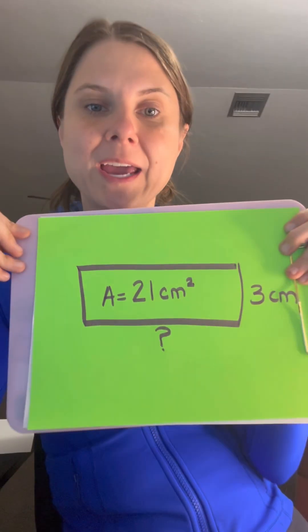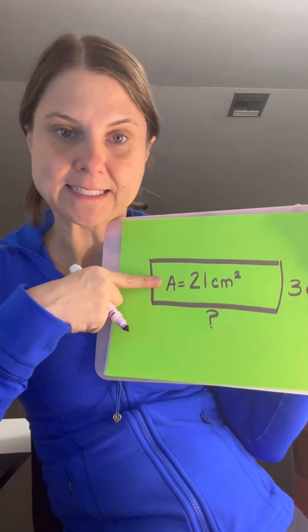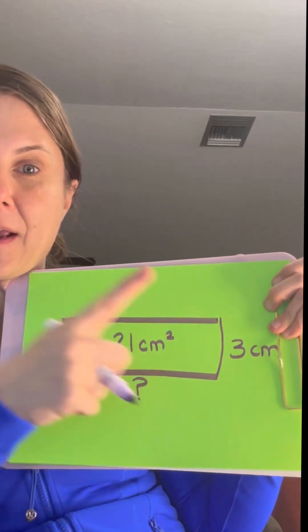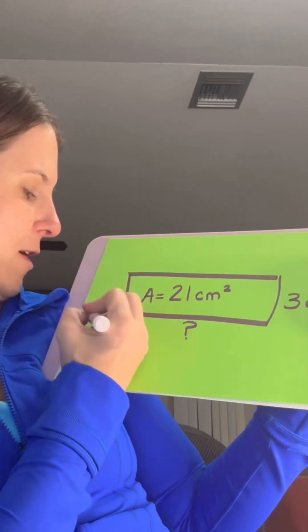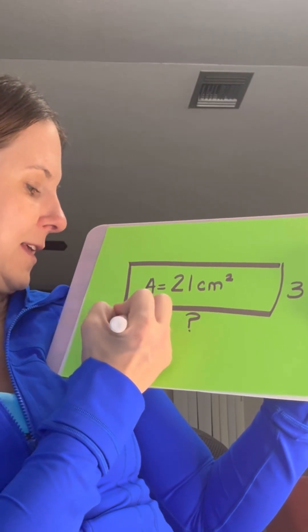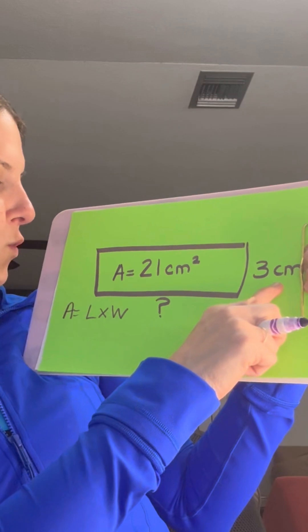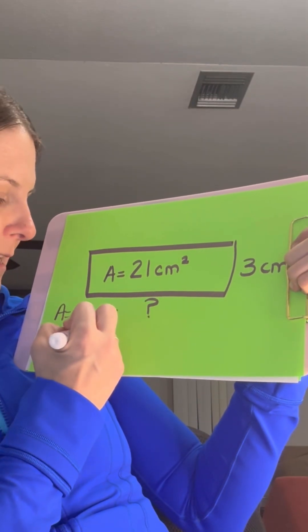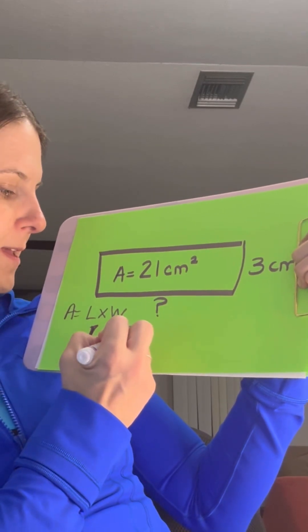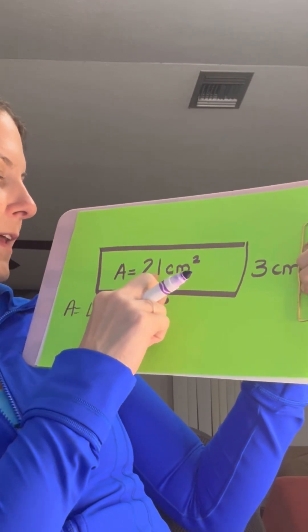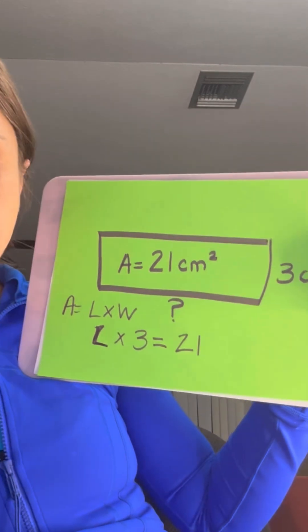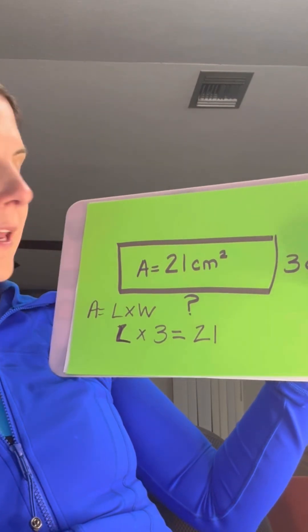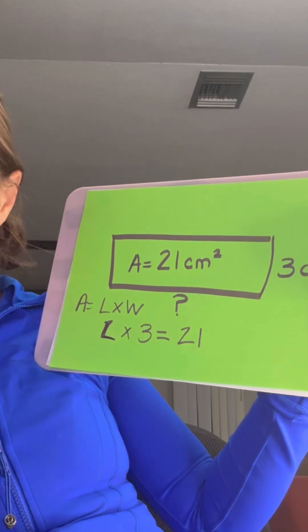Okay, so what if they're giving us the area and they only give us one side and we have to find the other? First write our formula down: A equals length times width. We know that this is the width, so length times three equals the area, which is 21. Well, we can think, what times three equals 21? Seven.